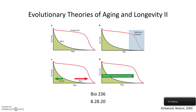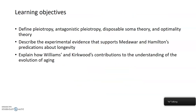This is part one of a lecture on the evolutionary theories of aging and longevity from 8-28-2020. Today we're going to talk about some of the evolutionary theories of aging, such as antagonistic pleiotropy and disposable soma theory. We're also going to discuss some experimental evidence that supports Medawar and Hamilton's theories from the last lecture, as well as how Williams and Kirkwood contributed to our understanding of how aging has evolved.